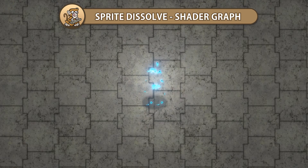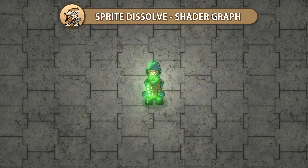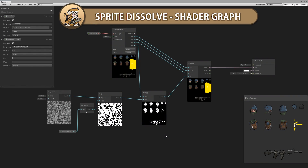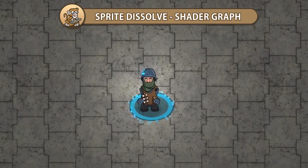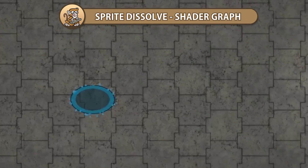In this video, we're going to make an awesome sprite dissolve shader using Shader Graph. We're going to have our character use the shader and through a simple script, we're going to make it dissolve and reappear.